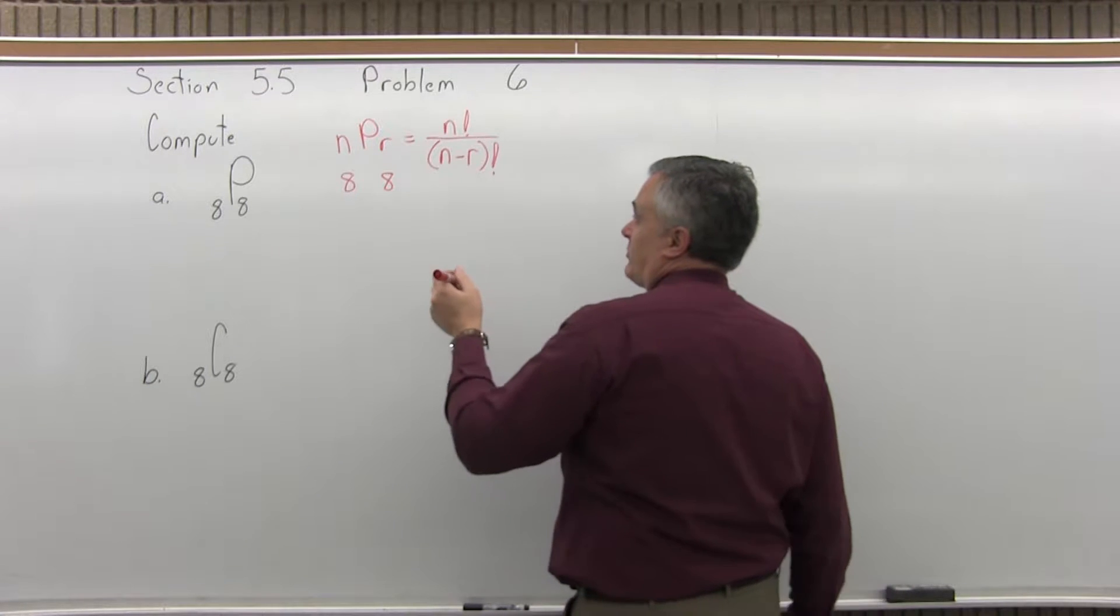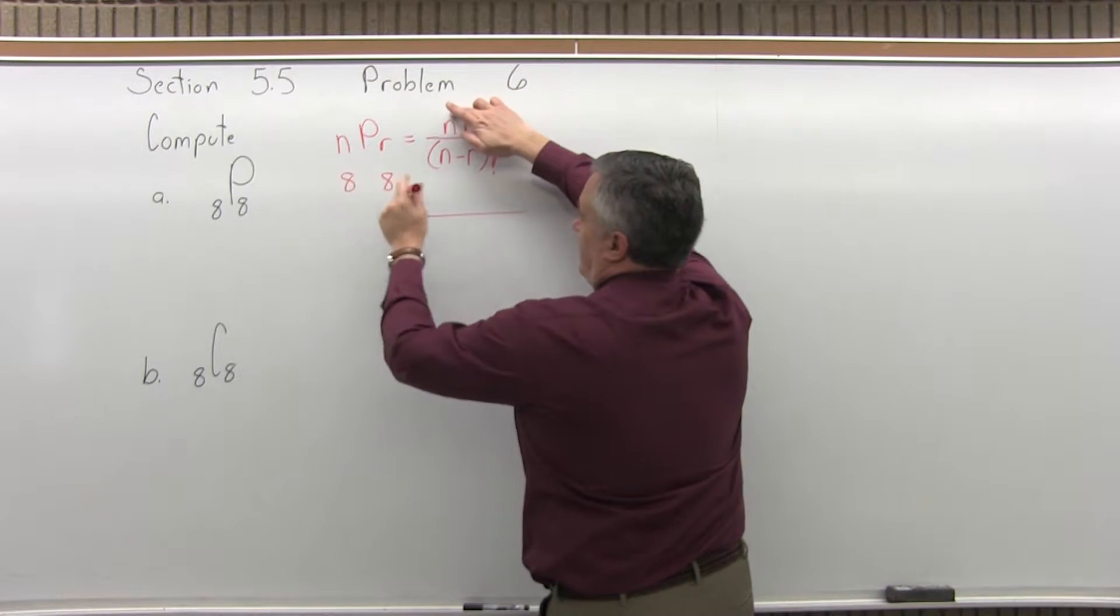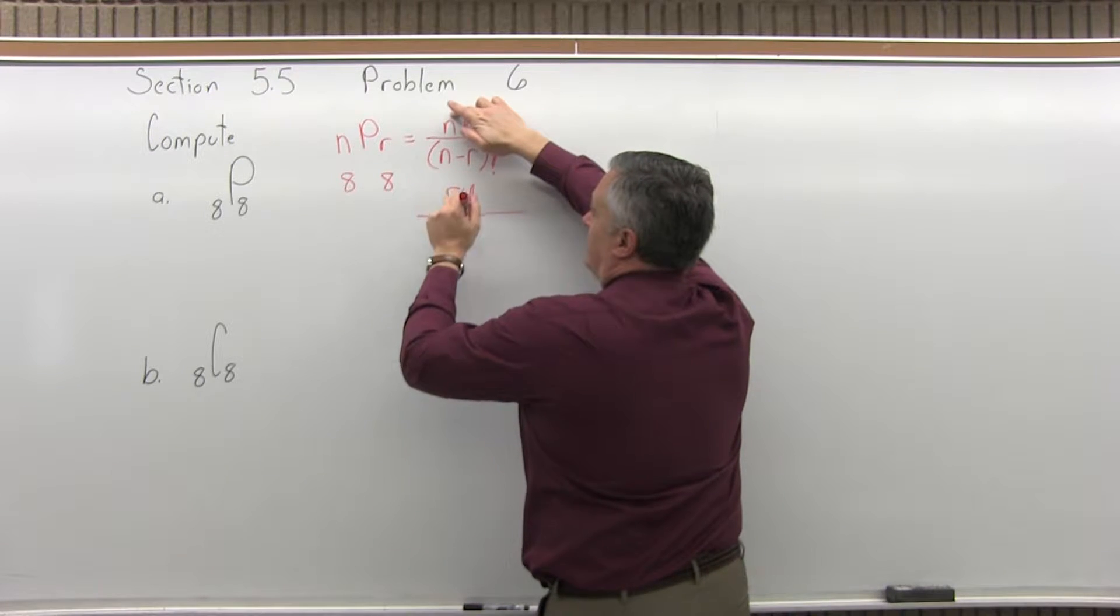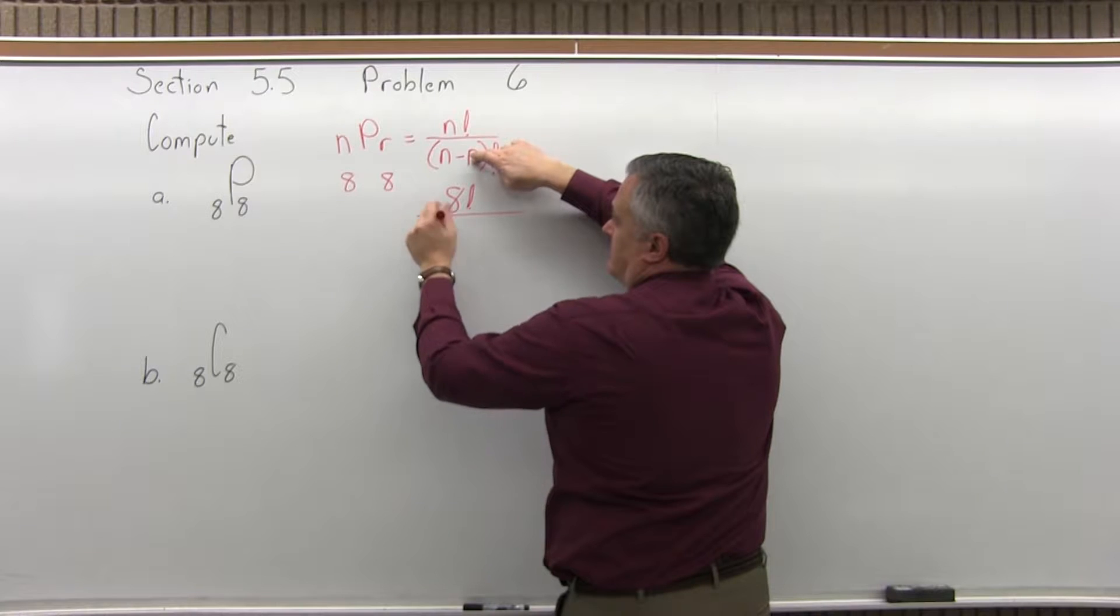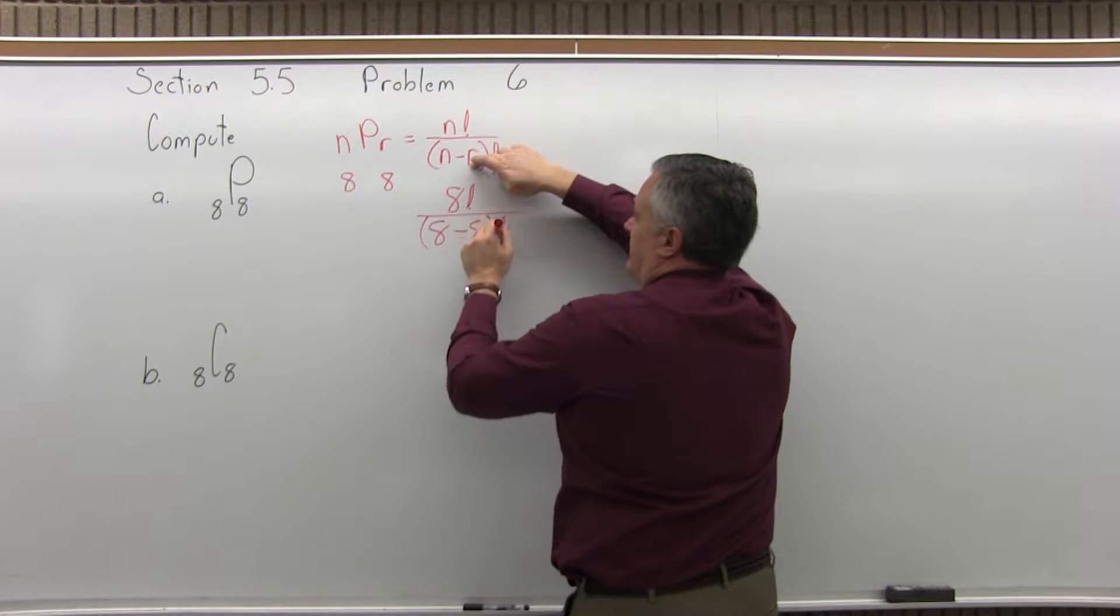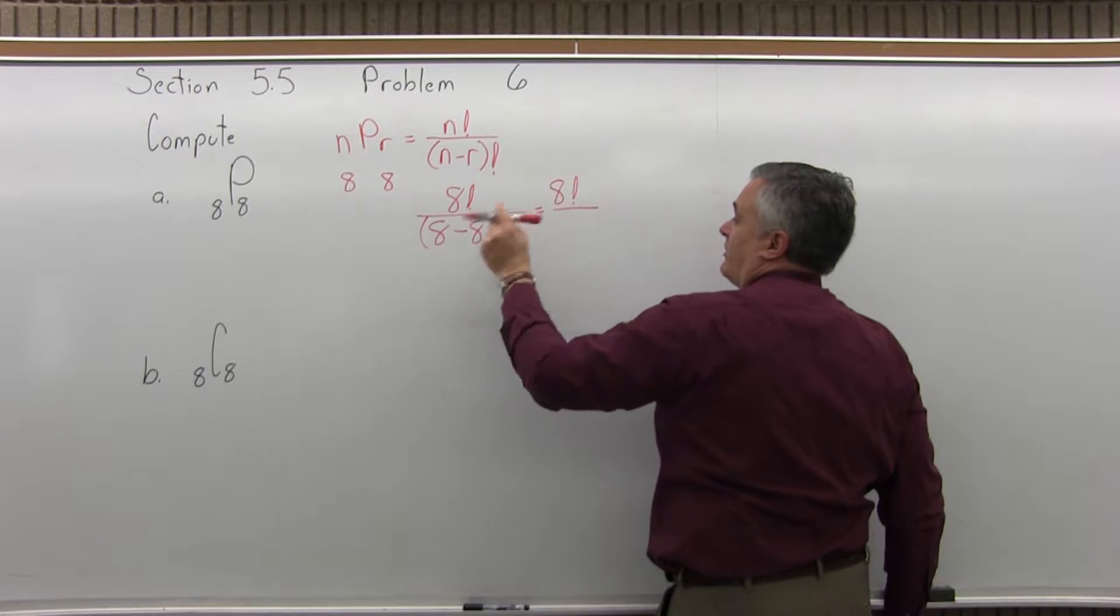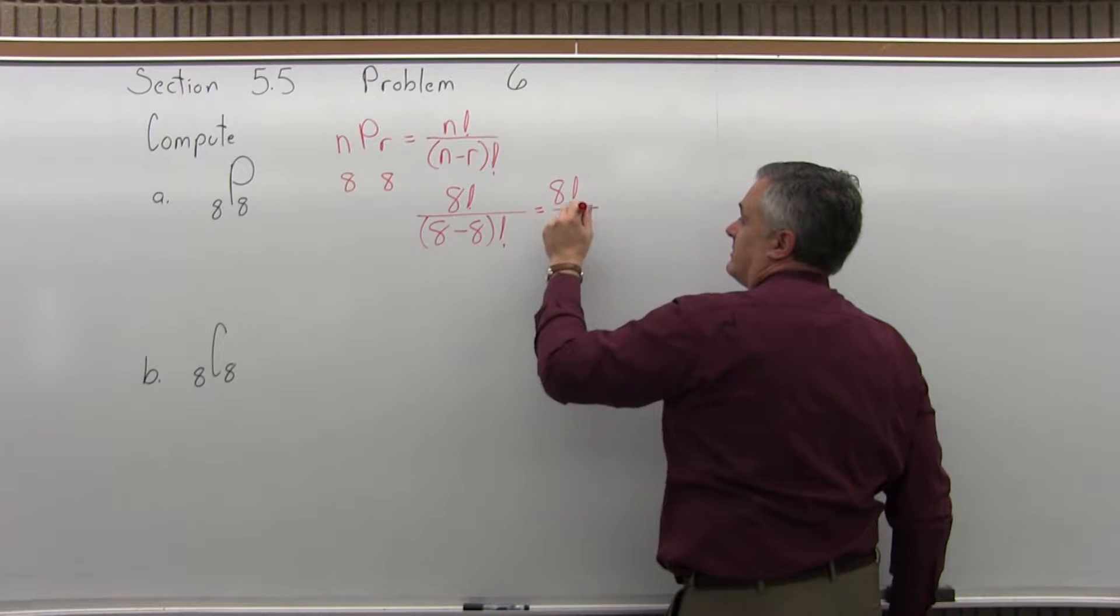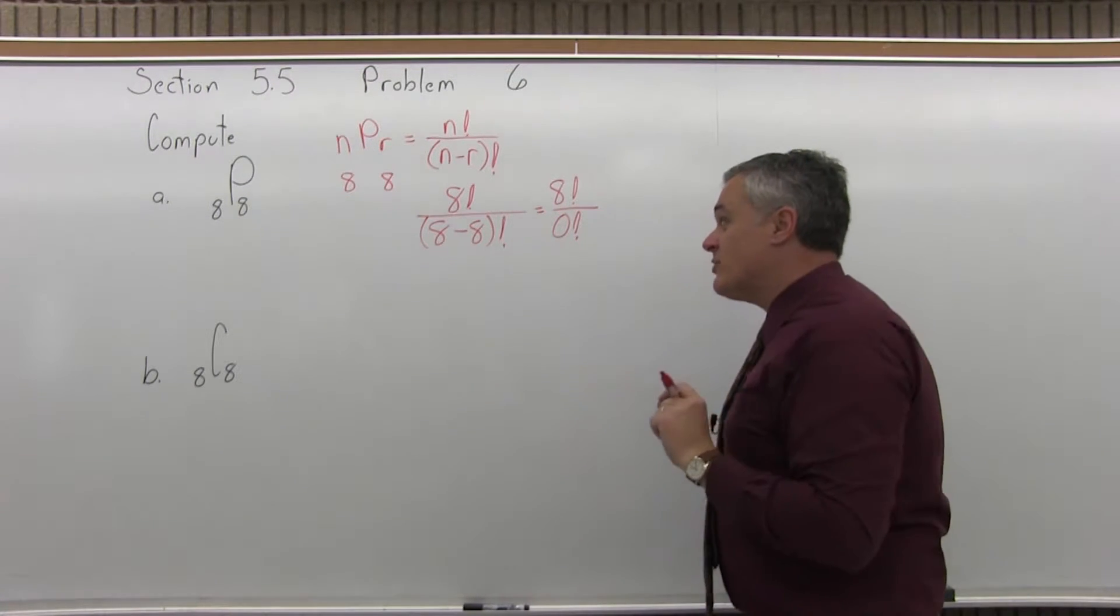So, on top, n factorial will be 8 factorial. In the denominator, n minus r will be 8 minus 8 factorial. So you're going to have 8 factorial over 8 minus 8 and 0 factorial. It's not 0. Remember, 0 factorial is defined to be 1.